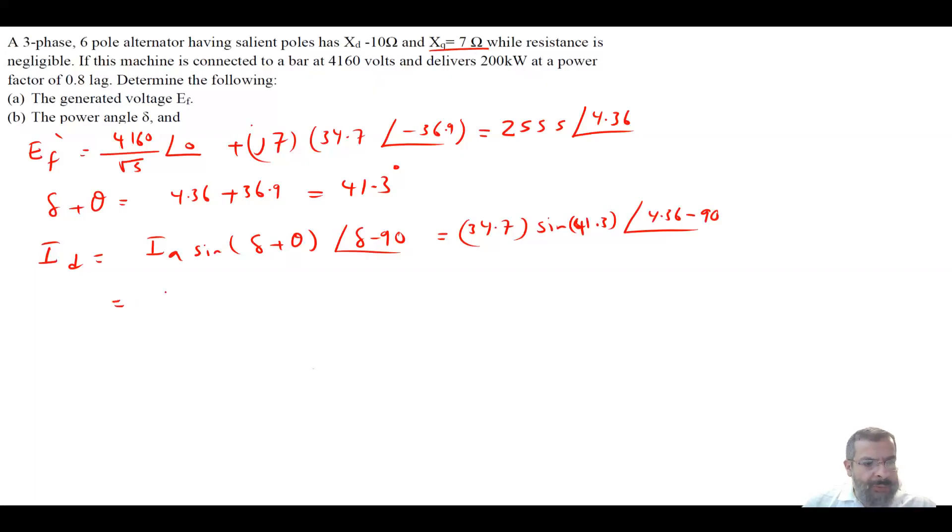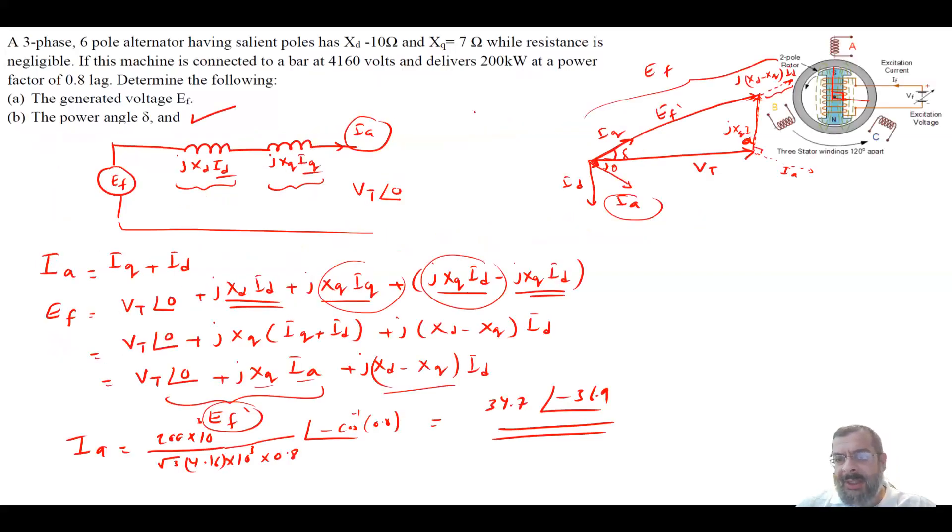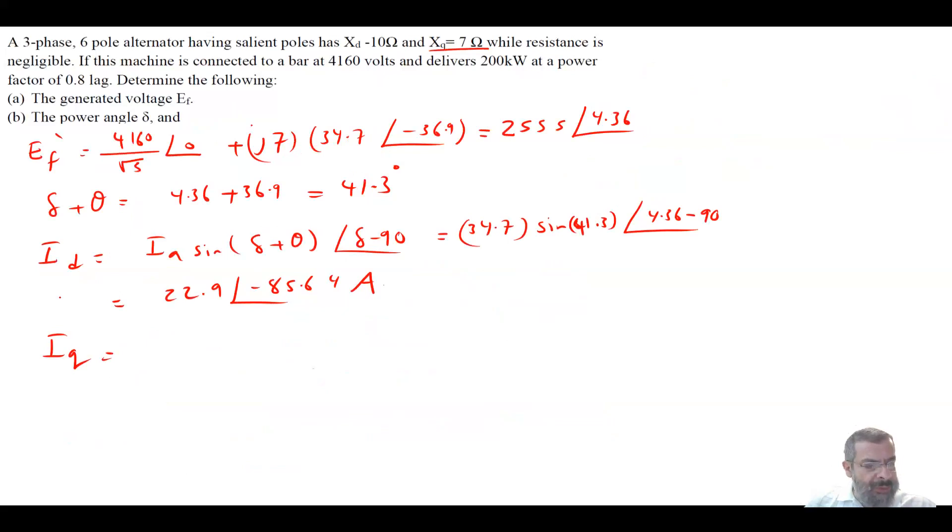So this will give me your IA 34.7·sin(41.3)∠(4.36-90°) and this will give me 22.9∠-85.64 amps. Then you need to find IQ which is the quadrature component. So this is basically IA·cos(delta plus theta) with an angle of only delta. This will give me 26.1∠4.36°. So this is your IQ and your ID. Now we have everything here.